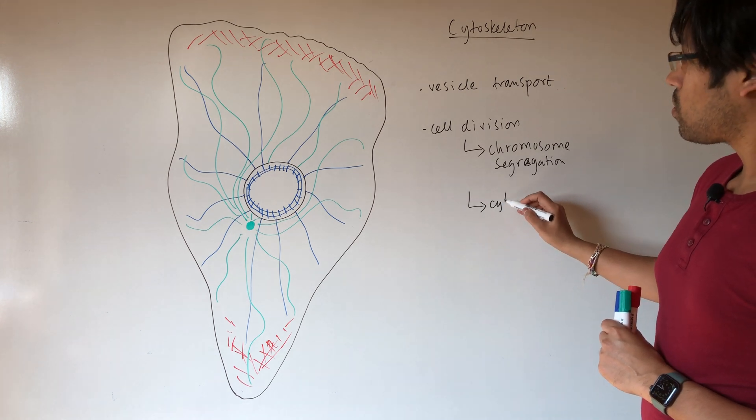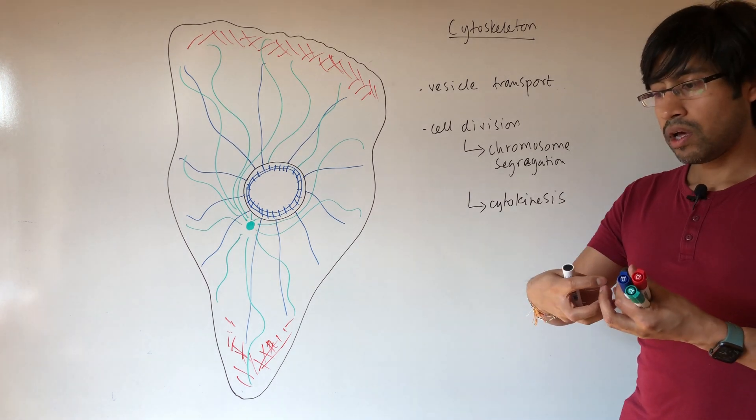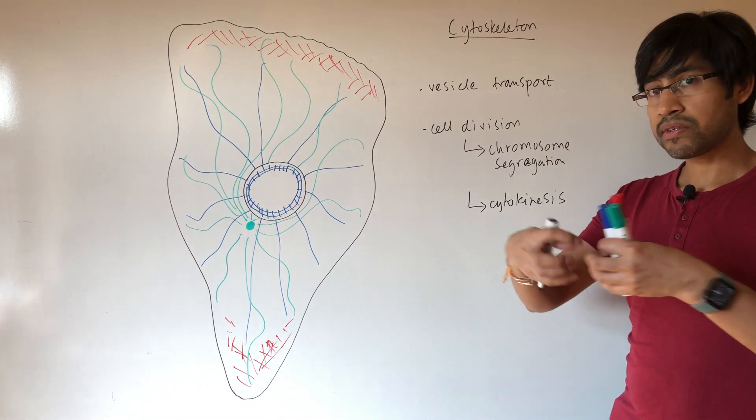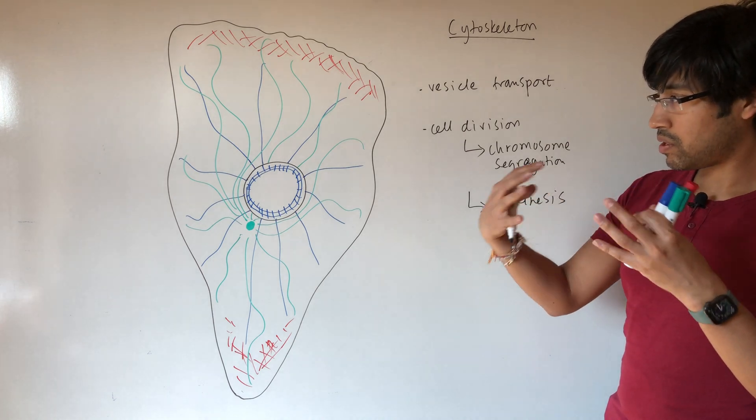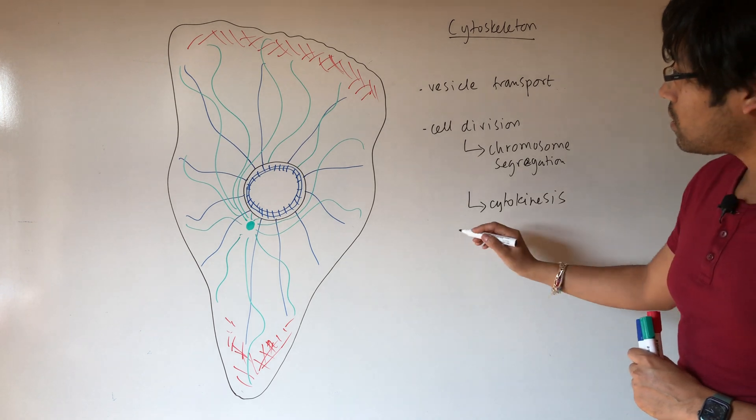Also cytokinesis. So the splitting of the cell or the splitting of the cytoplasm of the cell to form two new cells, cytokinesis also involves the cytoskeleton.